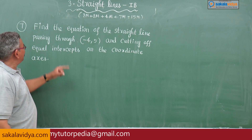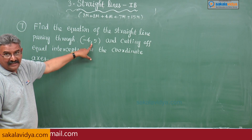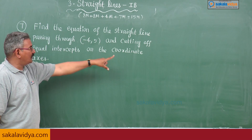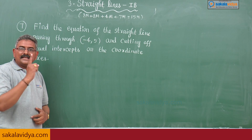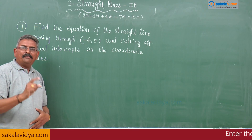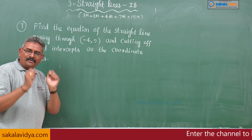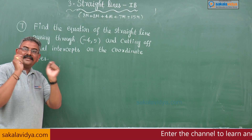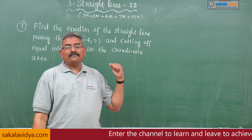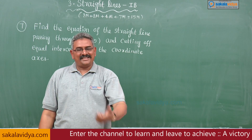That means the equation of the straight line passing through (x₁, y₁) and cutting equal intercepts on the coordinate axis is given by x plus y is equal to x₁ plus y₁. That is the shortcut you can remember for engineering entrance examinations. But this is a board examination, so you have to follow the process.